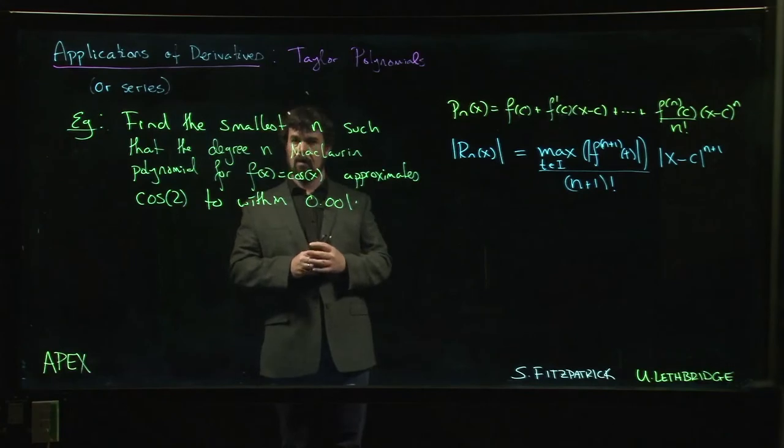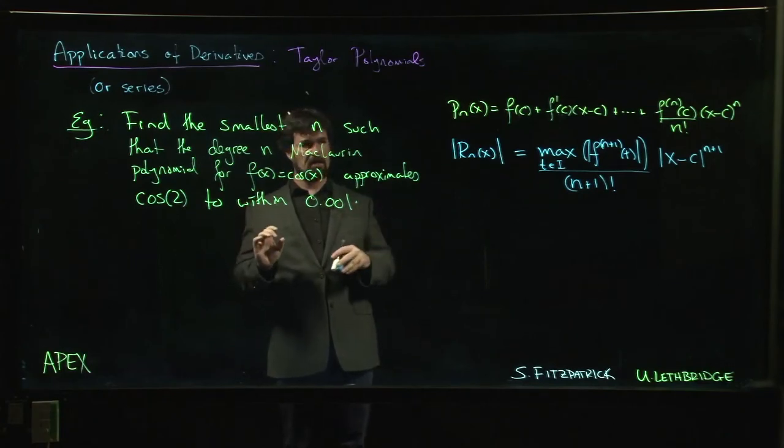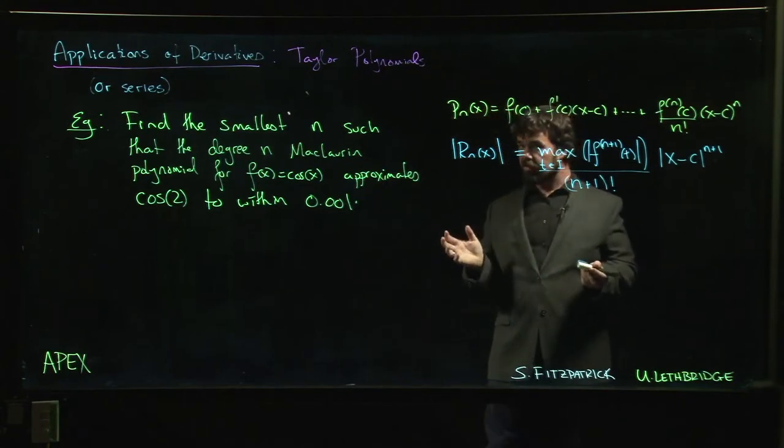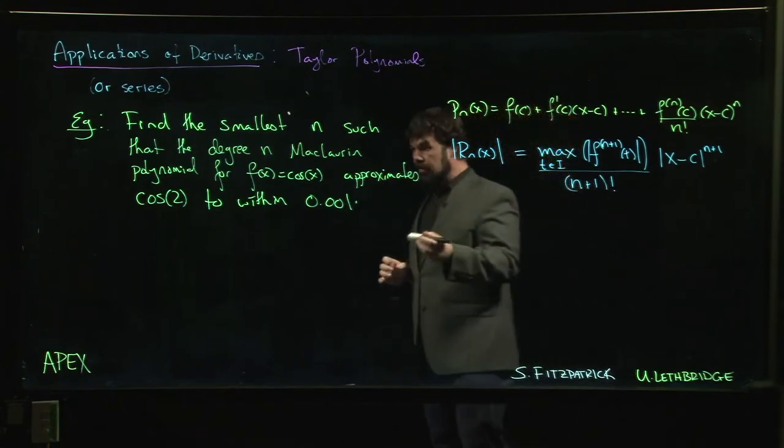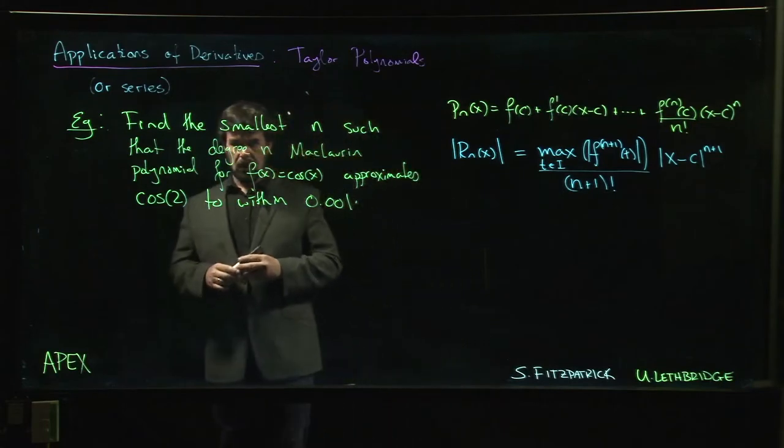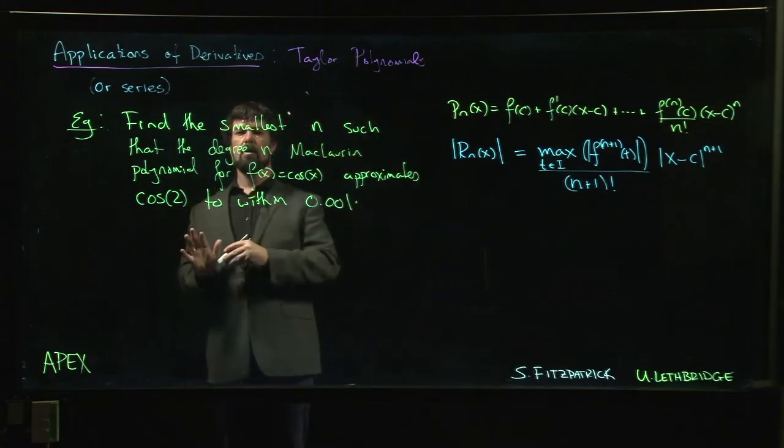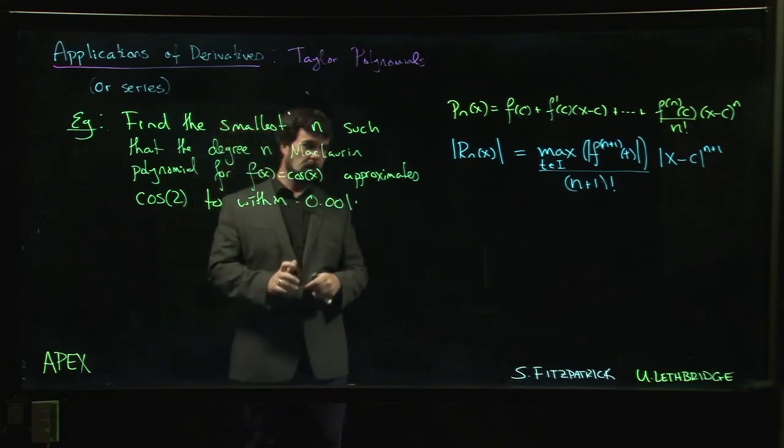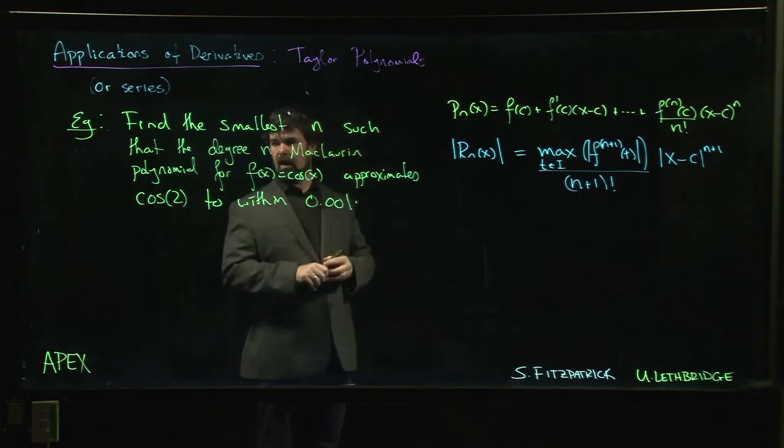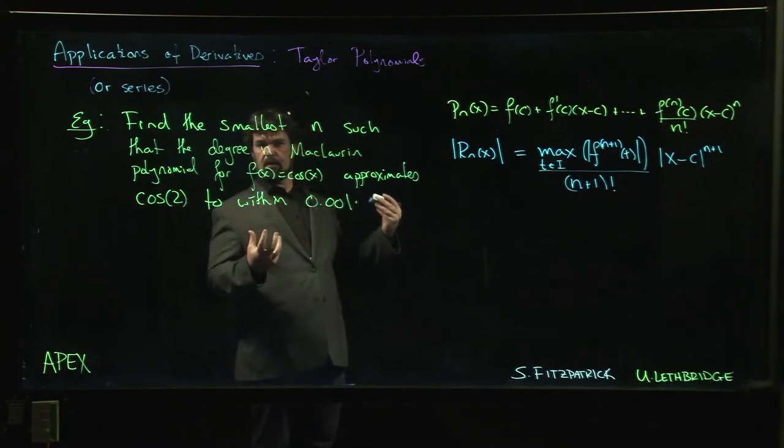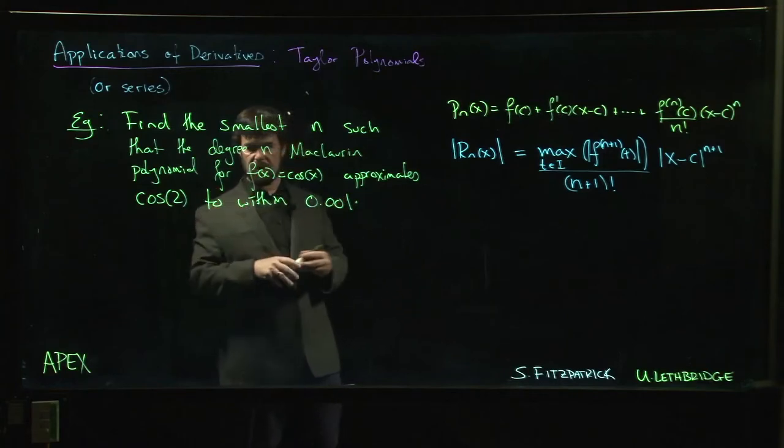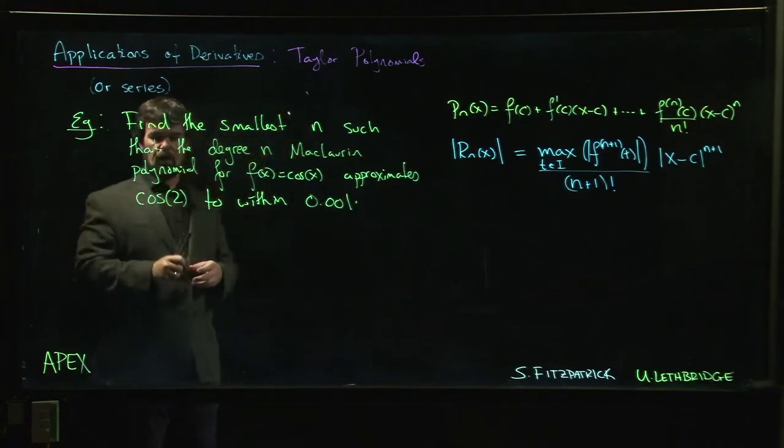All right, let's get another example. This is one you probably shouldn't try to do by hand. Chances are you want to have at least a scientific calculator with you, even better would be a spreadsheet. So the goal here is we want to approximate the cosine function with a Maclaurin polynomial and we want to figure out what is the smallest degree that we need if we want to make sure that our approximation has a certain degree of accuracy when approximating cosine of 2.